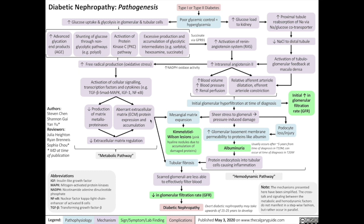Aberrant extracellular matrix protein accumulation results, first of all, in mesangial matrix expansion. One sign of that, seen on pathology, are Kimmelstiel-Wilson lesions, which are pink hyaline nodules caused by the accumulation of damaged proteins in the extracellular matrix. This aberrant accumulation also results in tubular fibrosis, involving scarred glomeruli that are less able to effectively filter the blood, resulting in a reduced glomerular filtration rate (GFR), and consequently diabetic nephropathy.